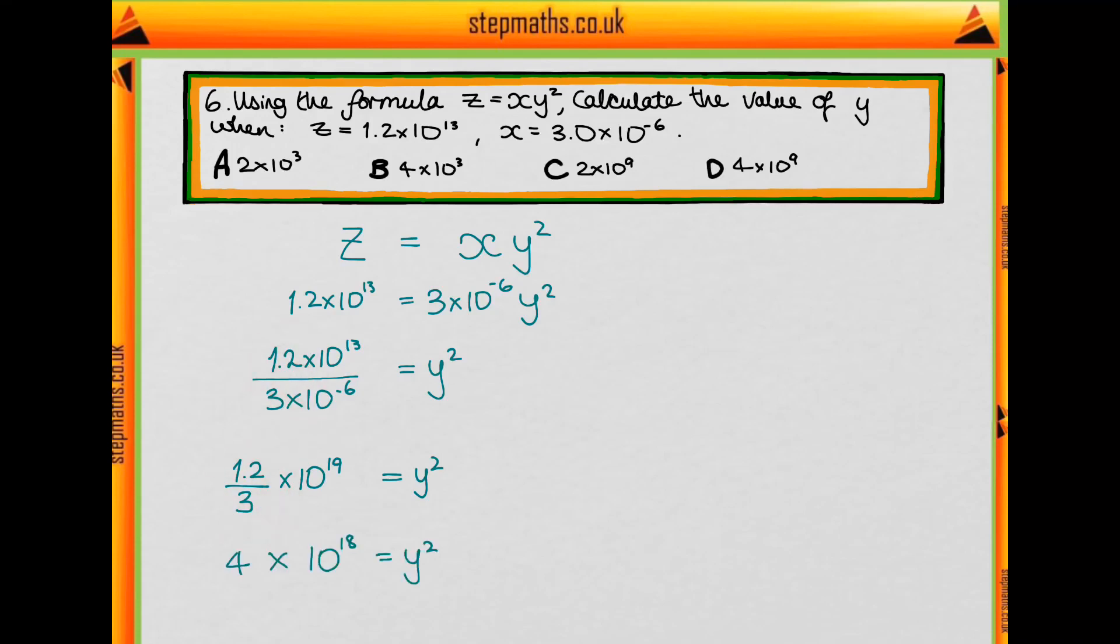Now, 1.2 over 3 is 0.4, so we have 0.4 times 10 to the 19, which is the same as 4 times 10 to the 18, and so we get this for y squared.